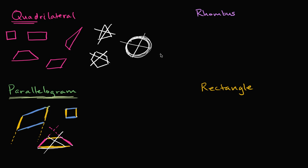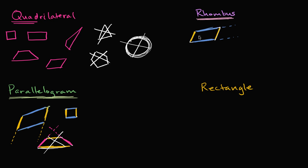So now let's talk about more types of quadrilaterals. The next one is the rhombus. A rhombus is a type of parallelogram — the opposite sides need to be parallel — but that alone doesn't make it a rhombus. All the sides also have to be equal. For example, this parallelogram I'm drawing is not a rhombus because the blue sides are longer than the yellow sides. A rhombus would have to look like this: opposite sides are parallel and all the sides are the same length.